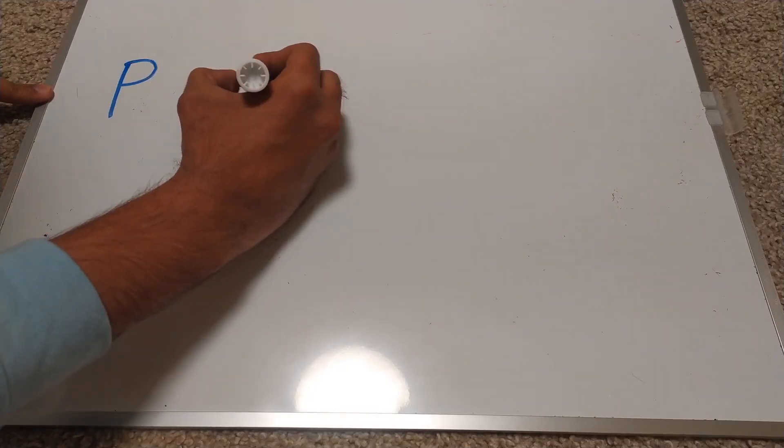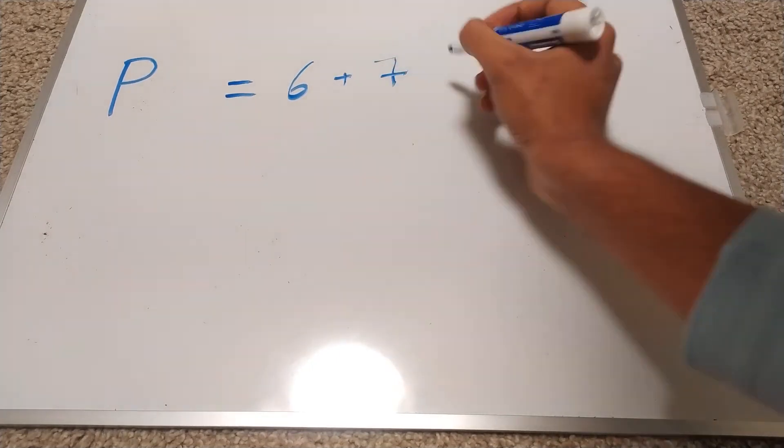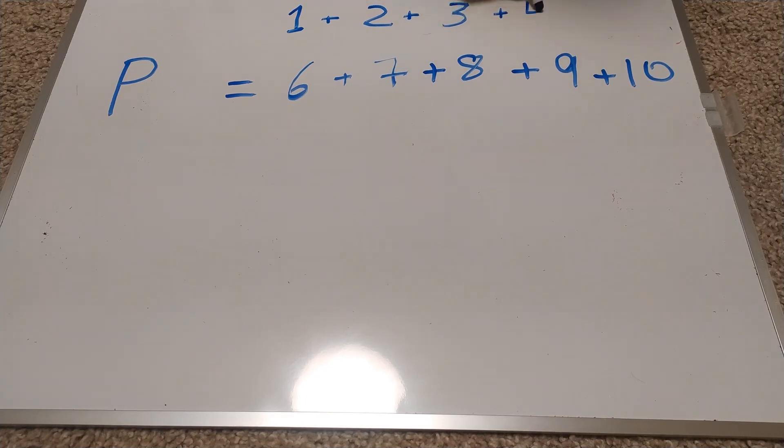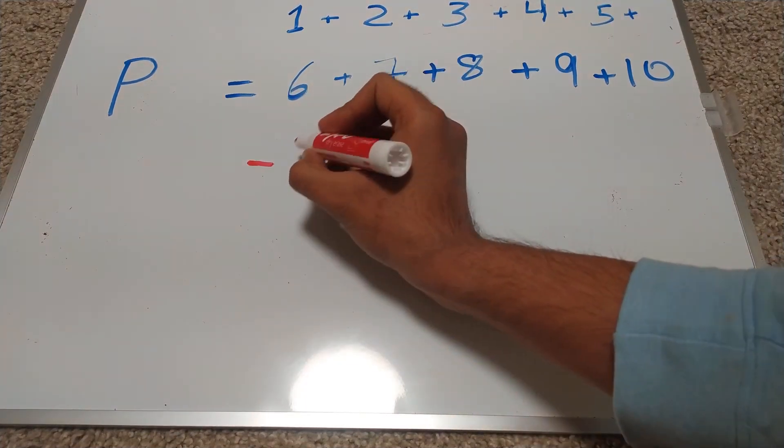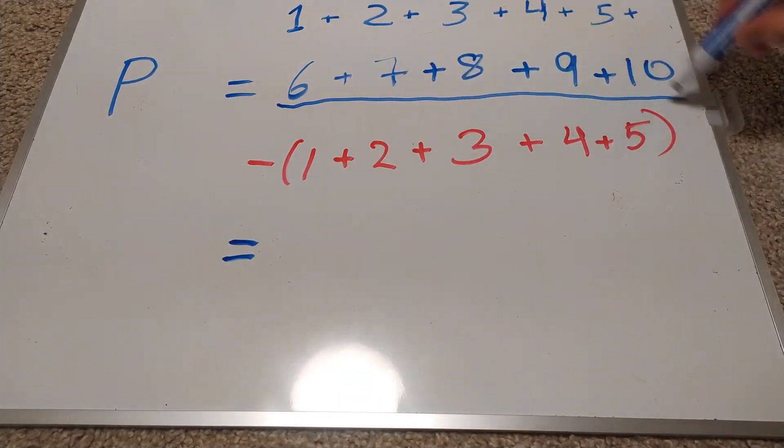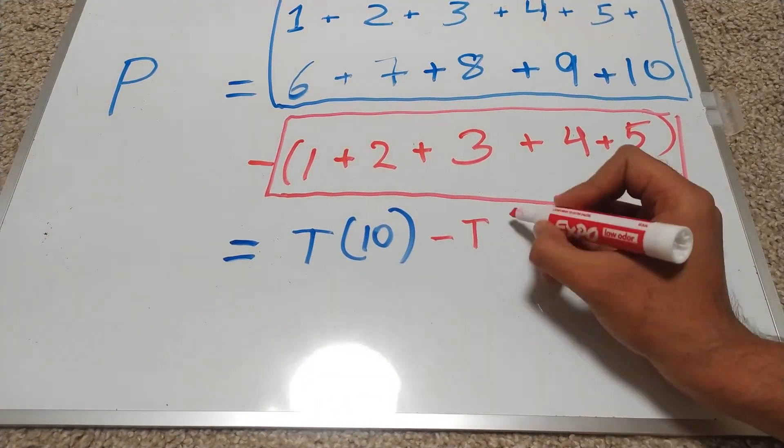A polite number is a sum of consecutive numbers, say for example 6 through 10. Now what we can do is add the sum of numbers 1 through 5 in the front and subtract the same sum from the end like nothing happened. As you can see, this gives the sum of the first 10 natural numbers minus the sum of the first 5.